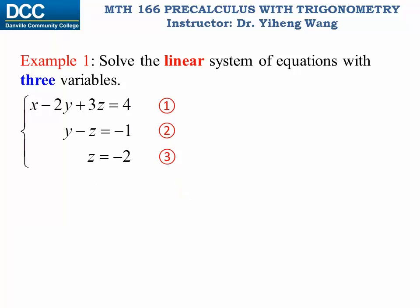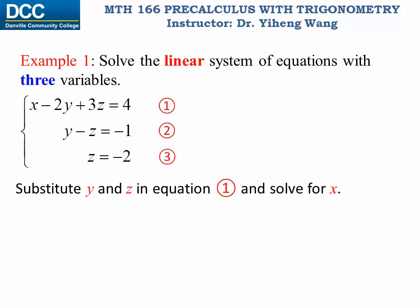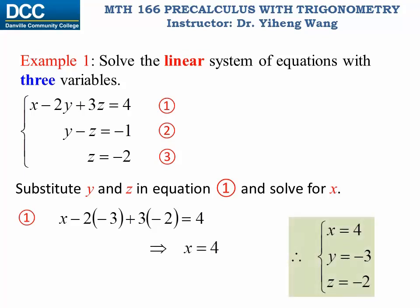Now since we know both z and y, we can substitute both of them into equation one and solve for x. Therefore equation one becomes this, with y substituted by negative three and z substituted by negative two. So we have one equation with only one unknown x, and we can solve for x, which is four. That is the solution to this example. By the way, this technique we just used is called back substitution.